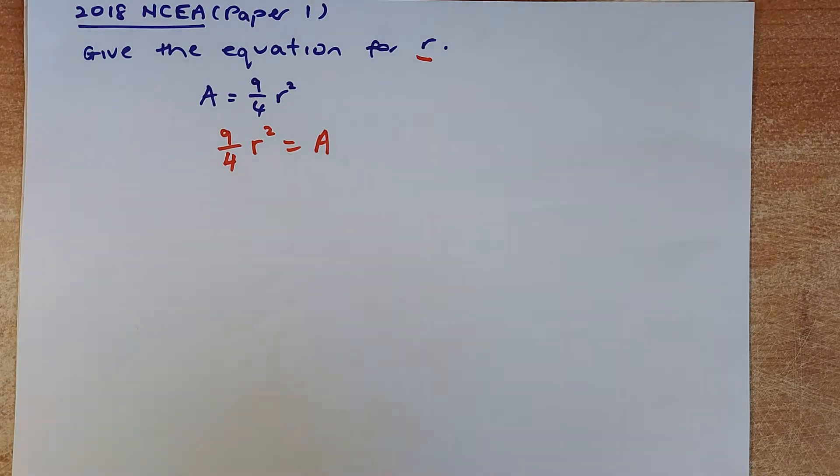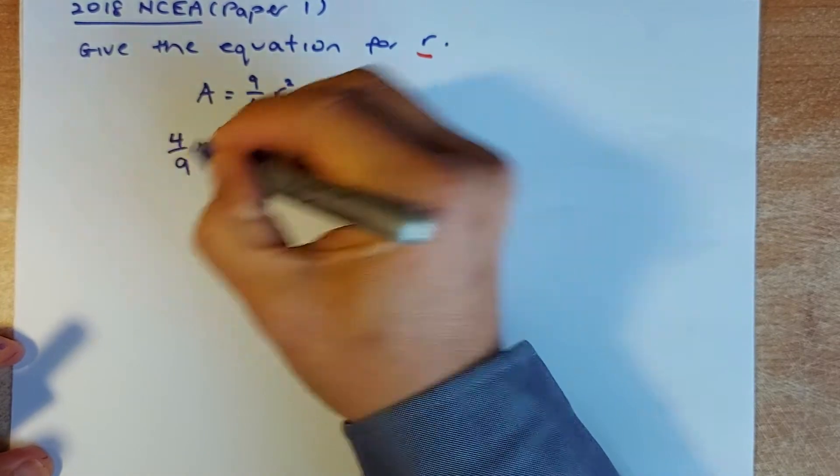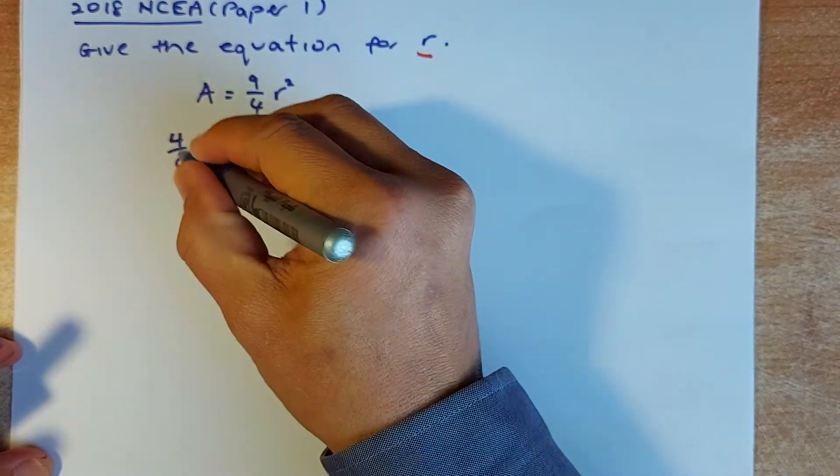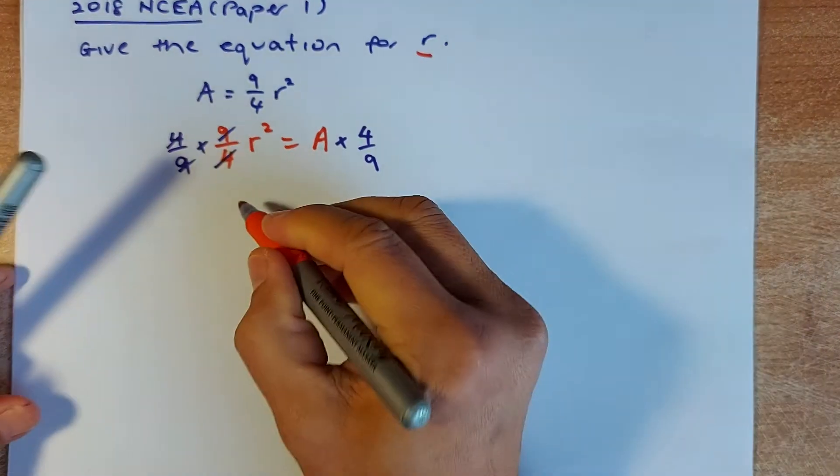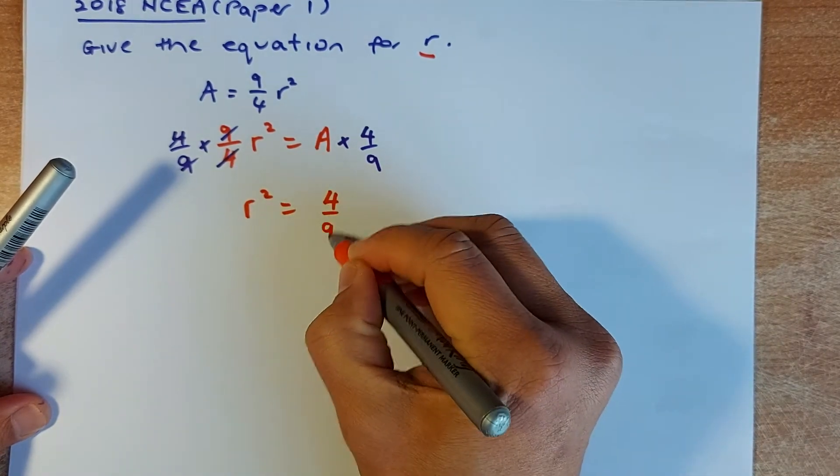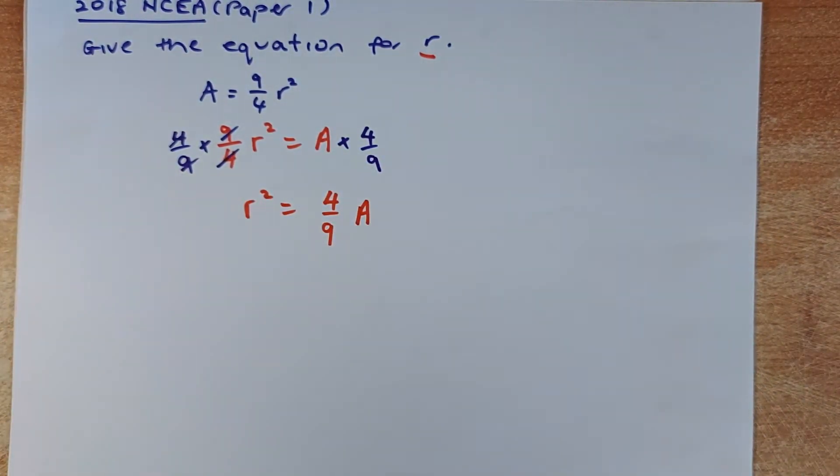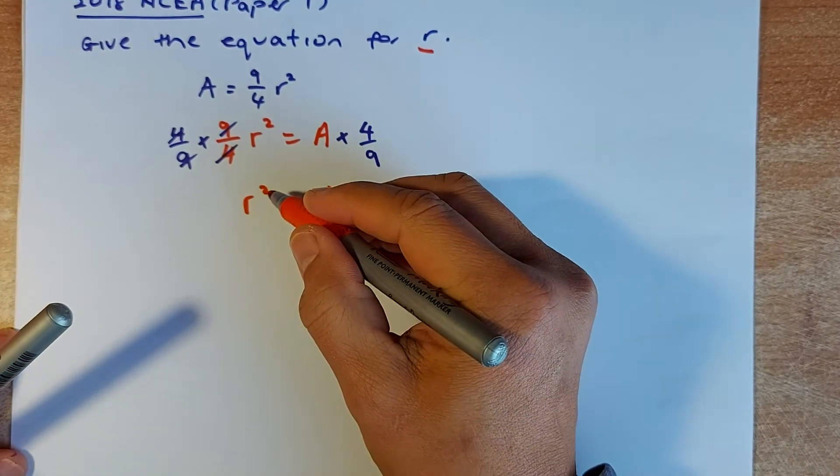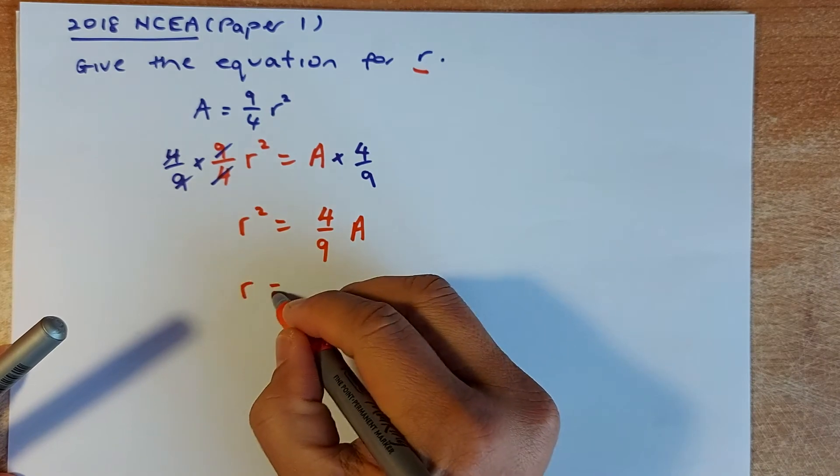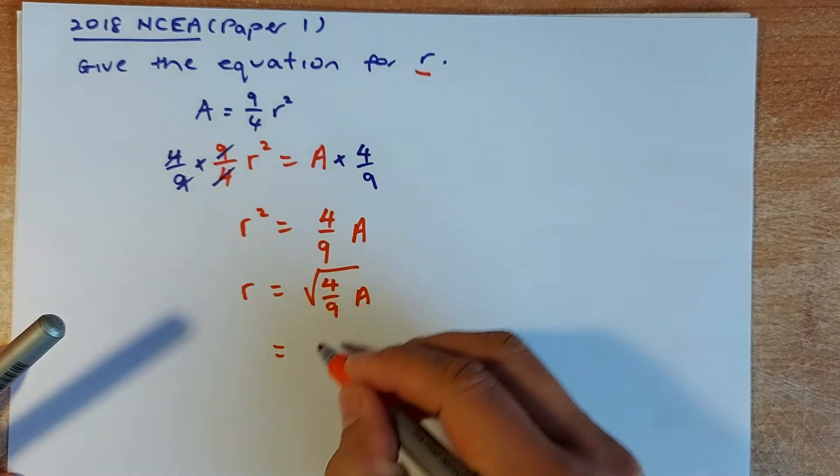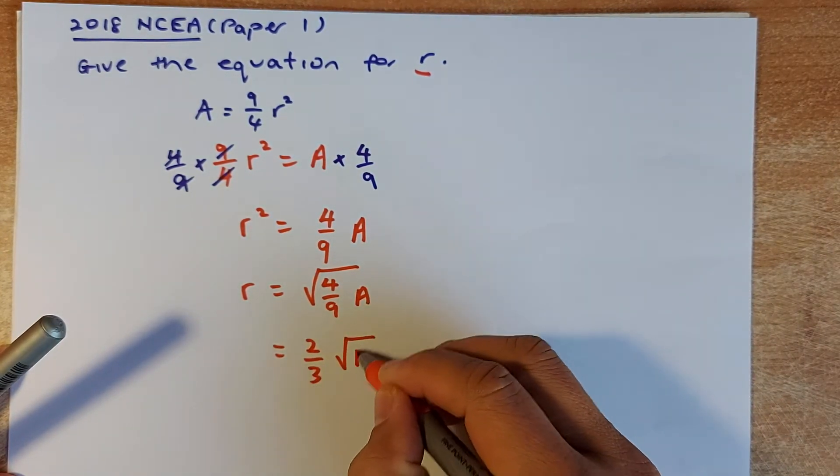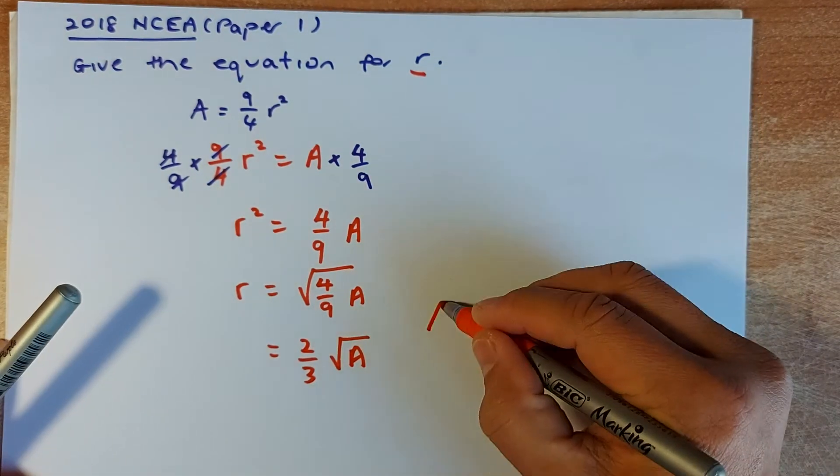Now, you need to get rid of 9/4. The reverse of 9/4, you have to multiply by 4/9. Because when you multiply them, 4/9 times 9/4, they will cancel out and they will become 1. So what's left is going to be R² = 4/9 A. And then the next step you need to do is to get rid of the square. The reverse of a square is the square root. So you're going to be R equals to square root of 4/9 A. Or if you know that square root of 4/9 is 2/3, that is also acceptable. So both of them will give you an achieve in NCEA level 1.